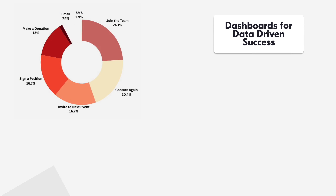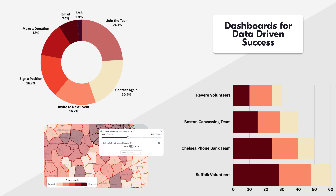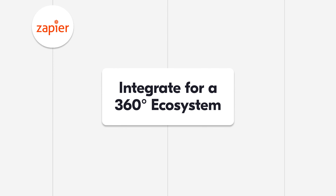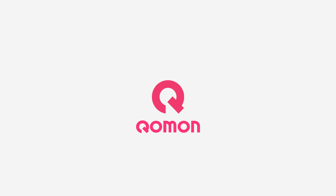Benefit from the power of real-time insights from your teams on and off the field, and connect Comon with over 5,000 integrations to automate tasks and build a 360-degree ecosystem. Try Comon today to start mobilizing for your cause, campaign, or community.